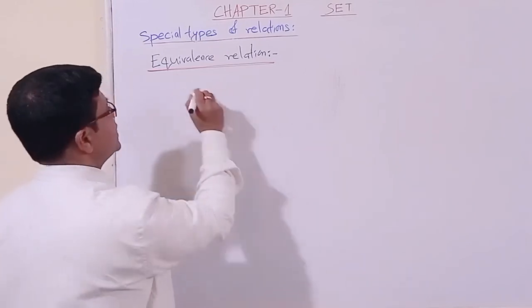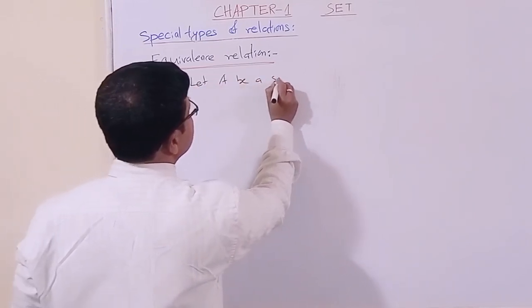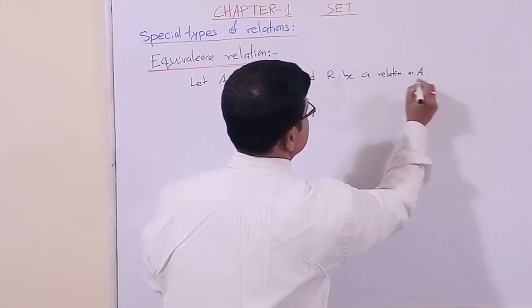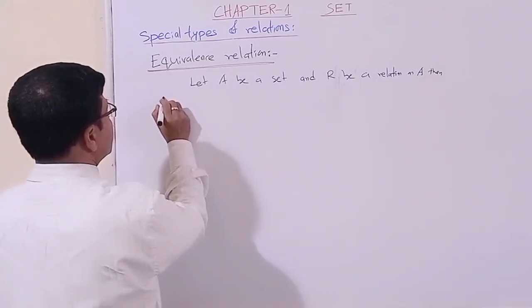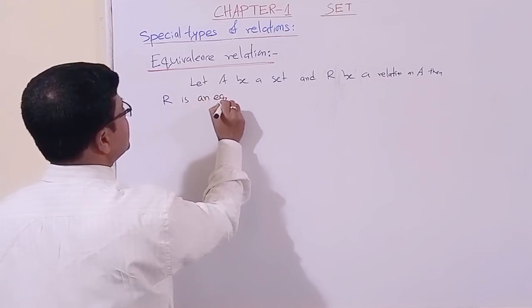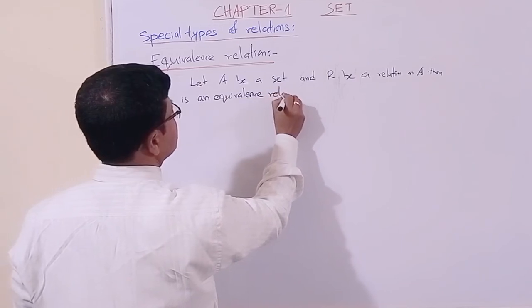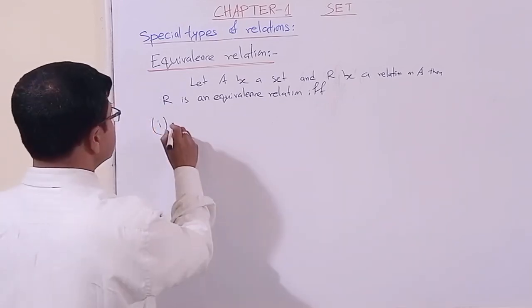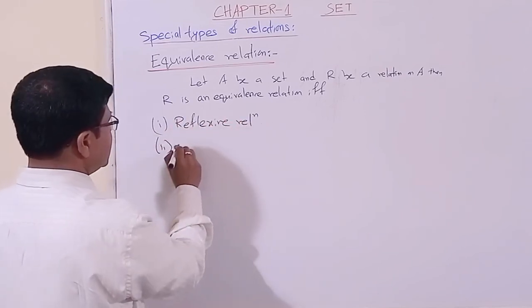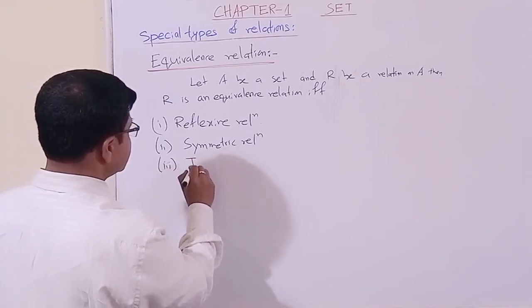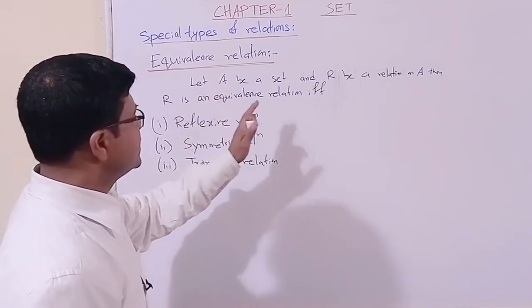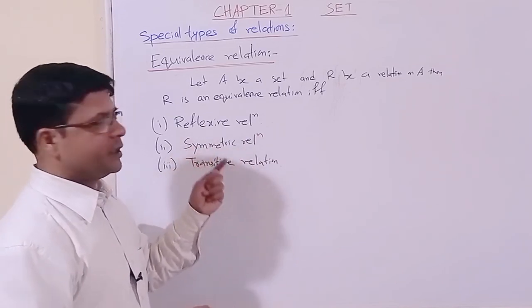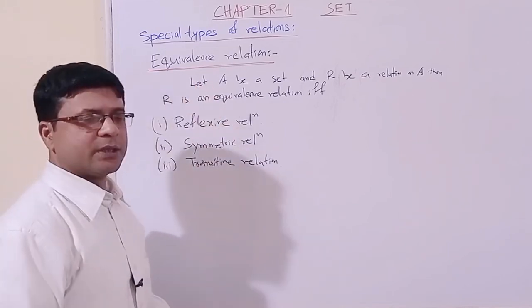Now, my dear beloved students, we have the topic of equivalence relation. Let A be a set and R be a relation on A. Then R is an equivalence relation if this relation is reflexive, this relation is symmetric, and this relation is transitive. R will be called an equivalence relation if and only if all three conditions hold. Now let us move to the exercise.